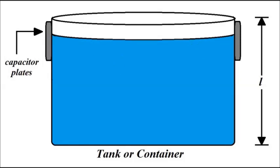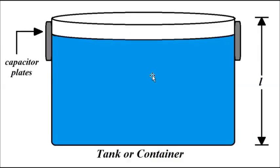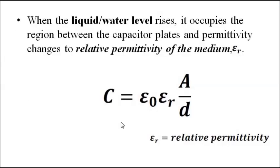When the liquid touches the plates, there will be a change in the relative permittivity. The absolute permittivity — the permittivity of free space or air — remains constant and cannot be changed. But the relative permittivity will change when the liquid level rises and occupies the medium between the two plates, causing a change in capacitance.